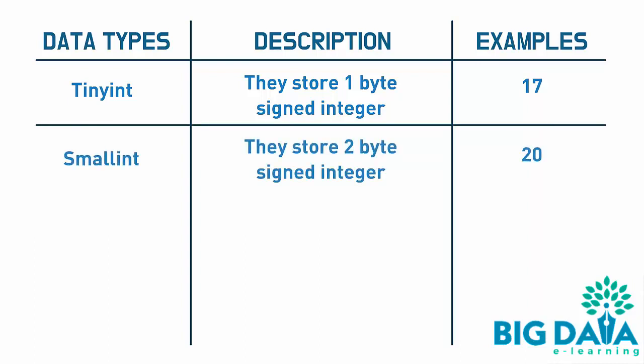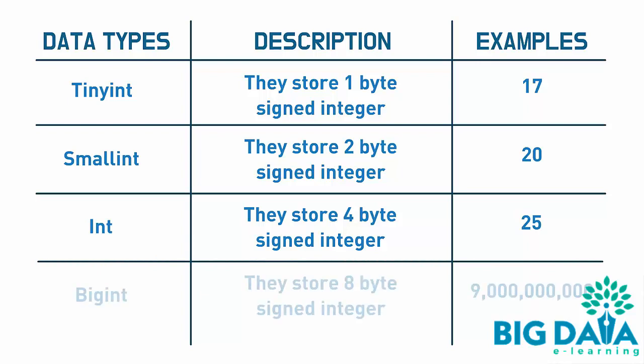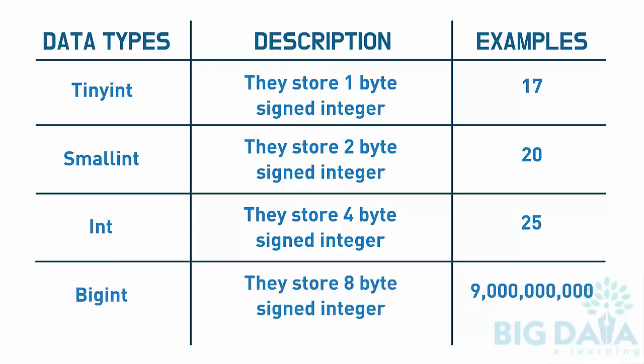SmallInt: they store 2 byte signed integer. For example, 20. Int: they store 4 byte signed integer. For example, 25. BigInt: they store 8 byte signed integer. For example, 9 billion.